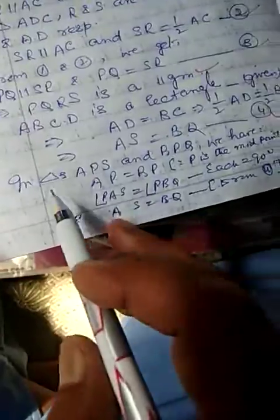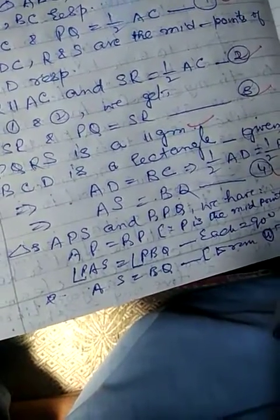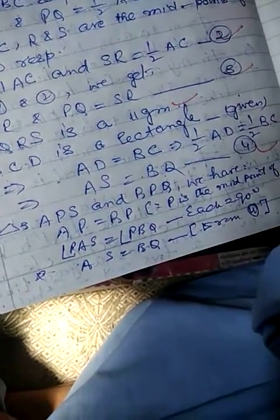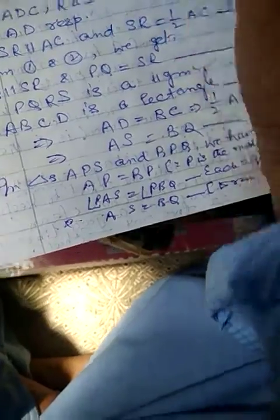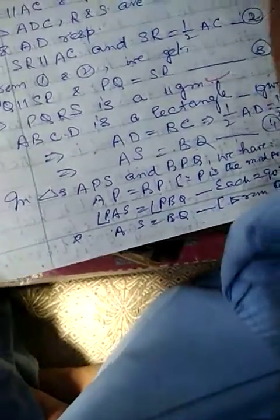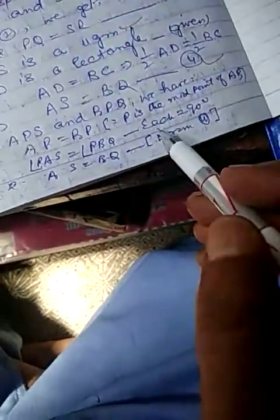Now we again take triangles APS and BPQ. We have AP is equal to BP because P is the middle point of AB. Angle PAS is equal to angle PBQ because each is equal to ninety degrees. And AS is equal to BQ from four. Therefore by Side Angle Side criterion of congruence, triangle APS is equal to triangle BPQ.